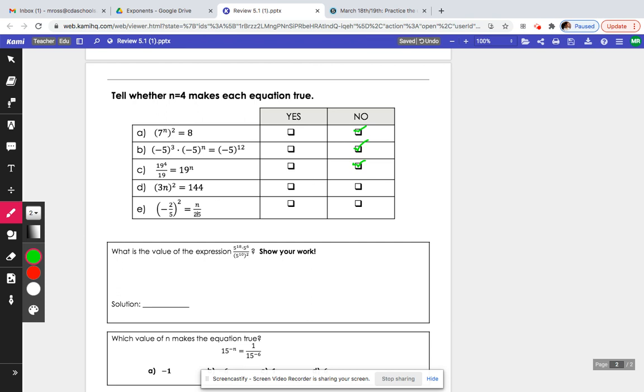3 times 4 would end up being 12. 12 to the second is 144, so this one's correct.